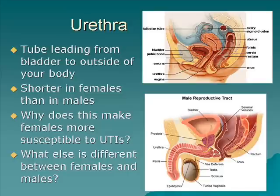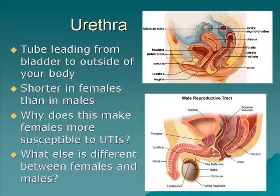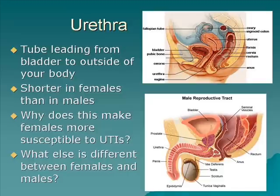Females have a much shorter urethra than males. Why do you think this makes females more susceptible to urinary tract infections — UTIs? Because the urethra is much shorter, it's much closer to the outside environment. No matter how hygienic a person is, there's bacteria all over your body and germs out in the world. So the closer your urinary tract and bladder are to that outside world, the more susceptible they become to urinary tract infections.